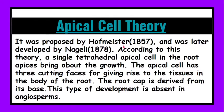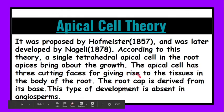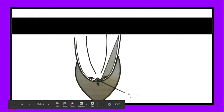First of all we will discuss apical cell theory. As in case of shoot apices we also discussed this theory. This theory was proposed by Hofmeister in 1857 and later on it was developed by Nageli in 1878. According to this theory, a single tetrahedral apical cell in the root apex brings about the growth.